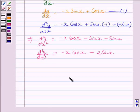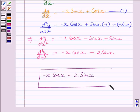So, the required second order derivative is given by minus x cos x minus 2 sin x. This is our required answer. This completes the session. Hope you enjoyed the session. Goodbye.